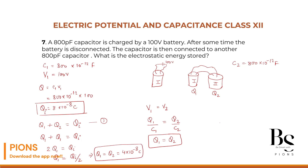Since we know the charge and capacitance, we can find the energy stored. Energy is a scalar quantity, so the total energy of the system equals the energy of the first capacitor plus the energy of the second. U = U1 + U2 = Q1²/(2C1) + Q2²/(2C2). We use this formula — energy in terms of charge and capacitance — because we already have Q1, Q2, C1, and C2 values.